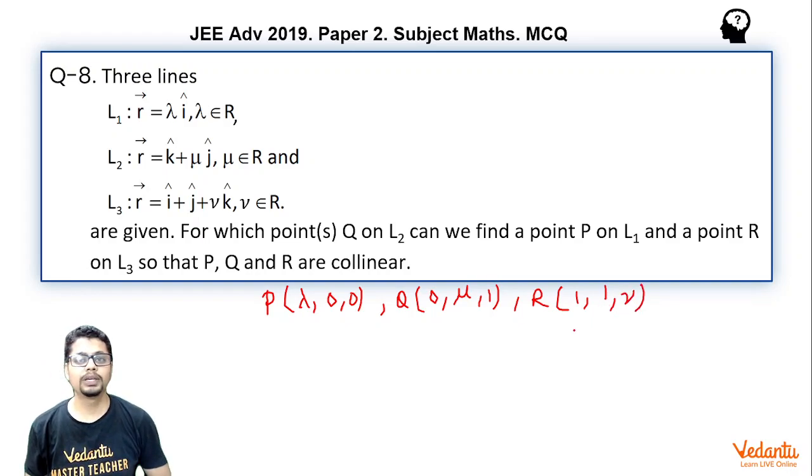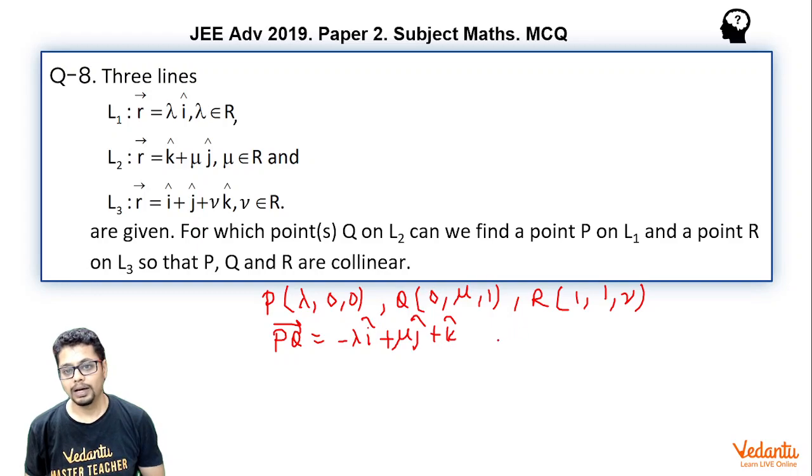Now for points P, Q and R to be collinear, vectors PQ and PR should be parallel or collinear. What is PQ vector? It is minus lambda i cap plus mu j cap plus k cap. And what about PR vector? It will be 1 minus lambda i cap plus j cap plus nu k cap.